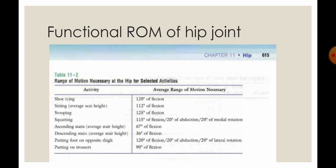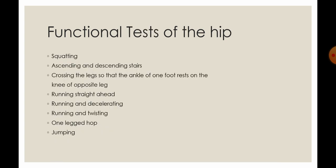To descend stairs — that means to come down from the stairs — you require 36 degrees of flexion. Putting the foot on the opposite thigh requires 120 degrees of flexion, 20 degrees of abduction, and 20 degrees of lateral rotation. Putting on trousers requires 90 degrees of flexion.